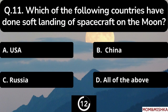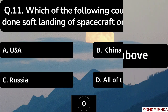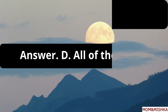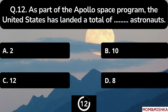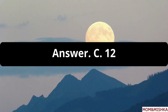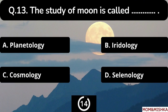Which of the following countries have done a soft landing of a spacecraft on the moon? The correct answer is option D: all of the above. As part of the Apollo space program, the United States has landed a total of blank astronauts — the answer is option C: 12 astronauts.